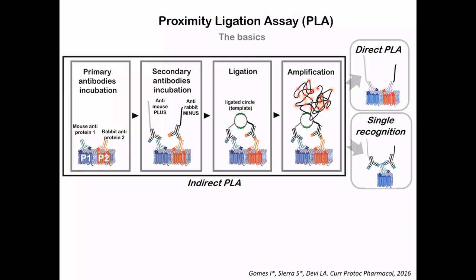Q: For suspension cells, can you use cytospin to spin them down onto a glass slide before doing PLA? A: Yes, you can do that. I haven't done it myself yet but it has been published, so I cannot give specific details, but it has been done.